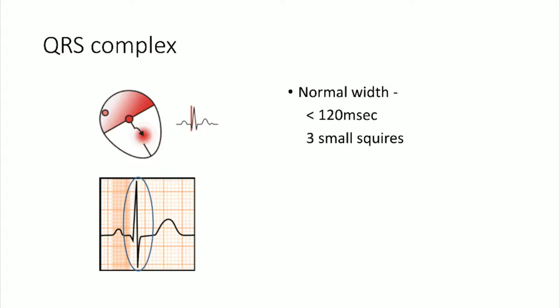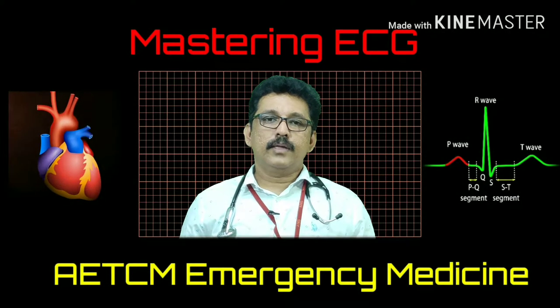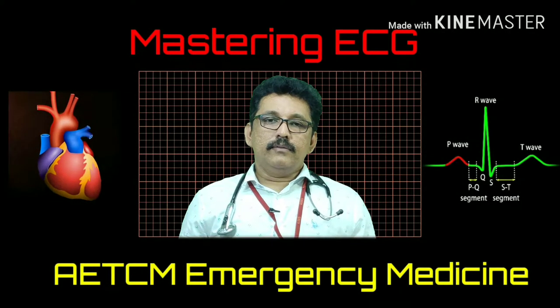The normal width of the QRS complex is less than 120 milliseconds or three small squares. Remember, the QRS complex should be less than three small squares if it is conducted through a regular pathway.